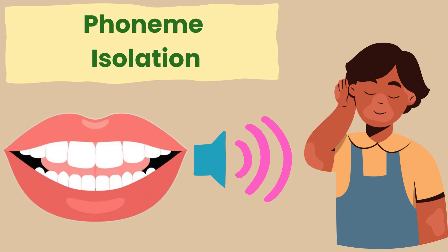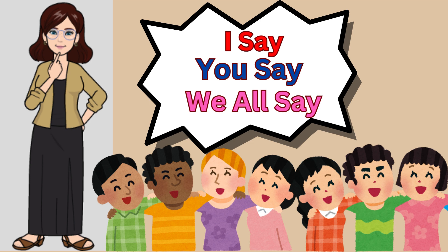Phoneme isolation. I will say a word. You will repeat the word back to me. Then we will say the word together. Then we will isolate the beginning initial sound. Example: I say mop. You say mop. We say mop. What sound? Mmm. I say mile. You say. We say mile. What sound? Mmm.